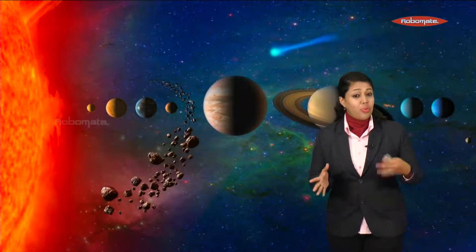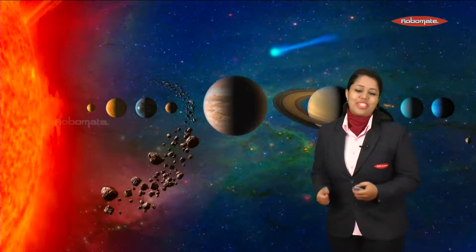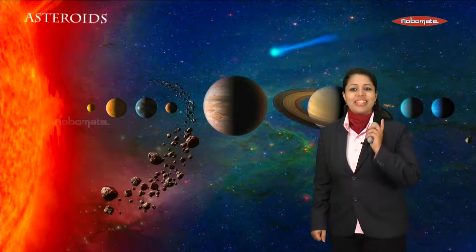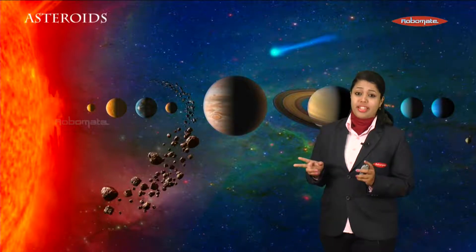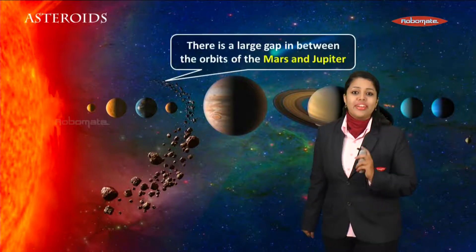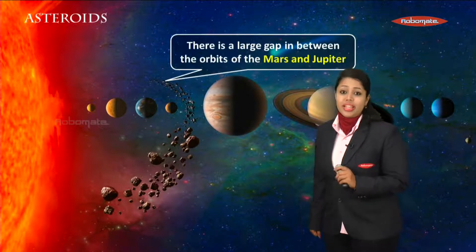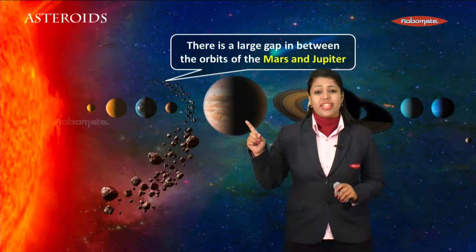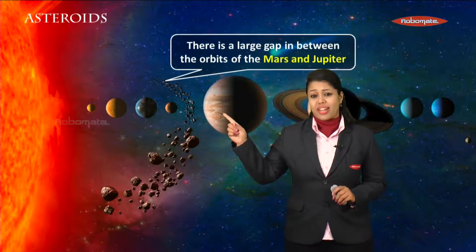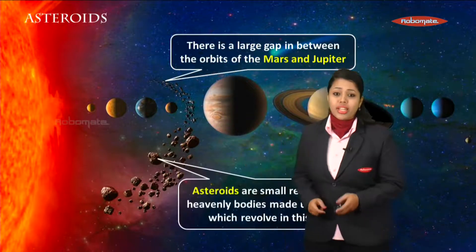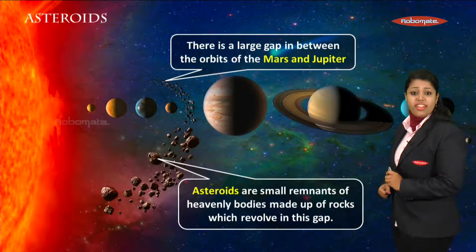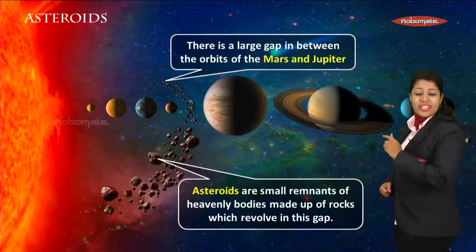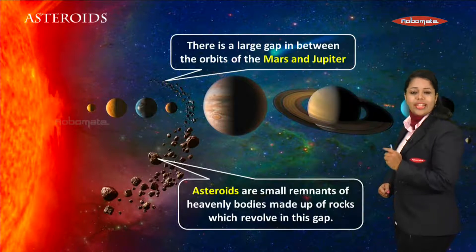Let's understand a few more members of our solar system — one of them is the asteroid. There is an asteroid belt — let's understand where it is. There is a large gap between the orbit of Mars and Jupiter. Asteroids are small remnants of heavenly bodies made up of rock, which revolve in this gap.